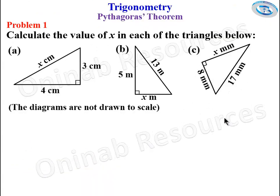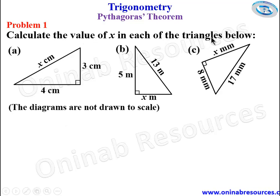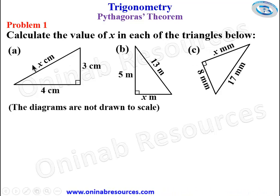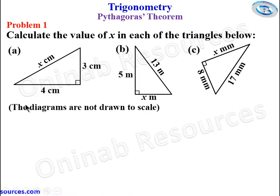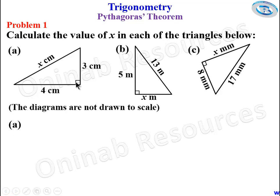We start with problem one: calculate the value of X in each of the triangles below. We have triangles A, B, and C. Starting from part A, the longest side here — which is the side opposite the right angle, called the hypotenuse — is X.